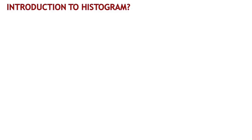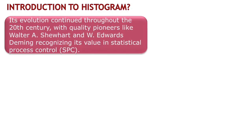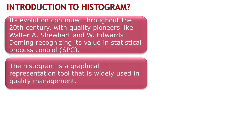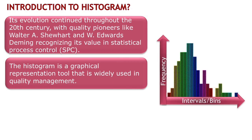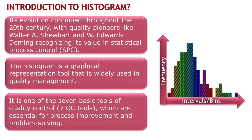The histogram has a rich history that dates back to the 20th century. Quality gurus such as Walter A. Shewhart and W. Edwards Deming recognized its value in statistical process control. Now, you might be wondering what exactly is a histogram. Simply put, it's a tool that helps us visualize data in a meaningful way. It allows us to see the distribution and patterns in a dataset. The histogram is not just any tool — it's one of the seven basic tools of quality control, also known as the seven QC tools. These tools are essential for process improvement and problem solving.